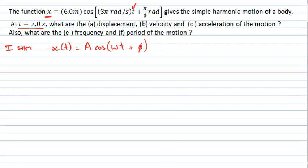What I can do is look at the expression and I can see a few things straight away. I know that my amplitude is equal to 6.0 meters. I know that omega, my angular frequency, is going to be given by 3π. And I know that my phase constant phi is equal to π/3.